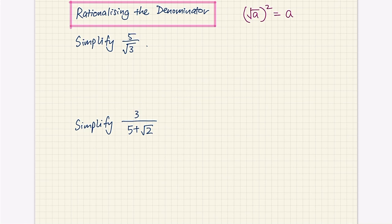We're going to first apply one of the basic properties, which is property 3 from our first discussion. So what was basic property 3? Basic property 3 is where if we have the square root of a and we square it, we're going to just get a. So what it does is remove the square root.